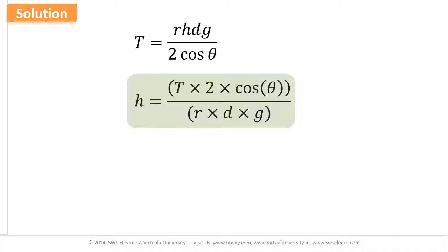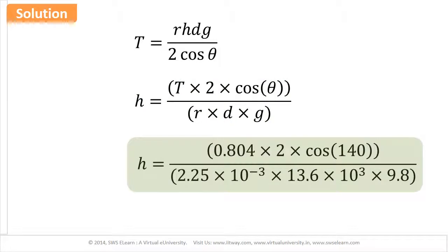Substituting numerical values in this equation, we get H = (0.804 × 2 × cos 140) upon (2.25 × 10⁻³ × 13.6 × 10³ × 9.8).